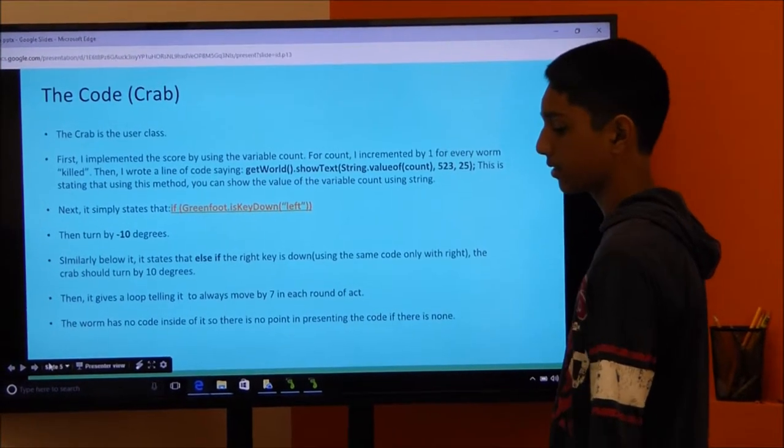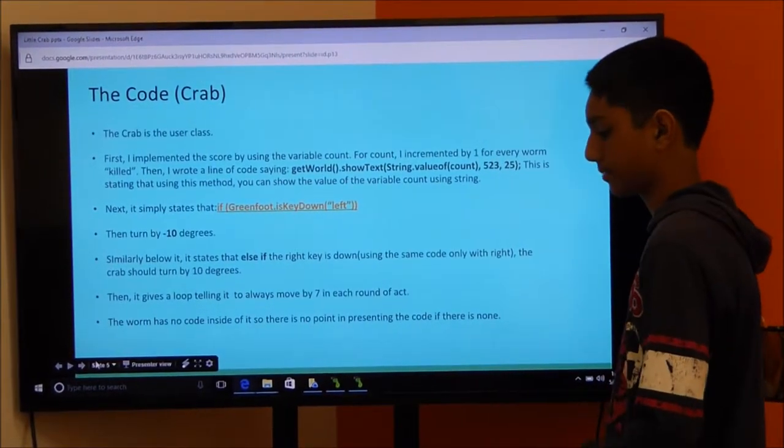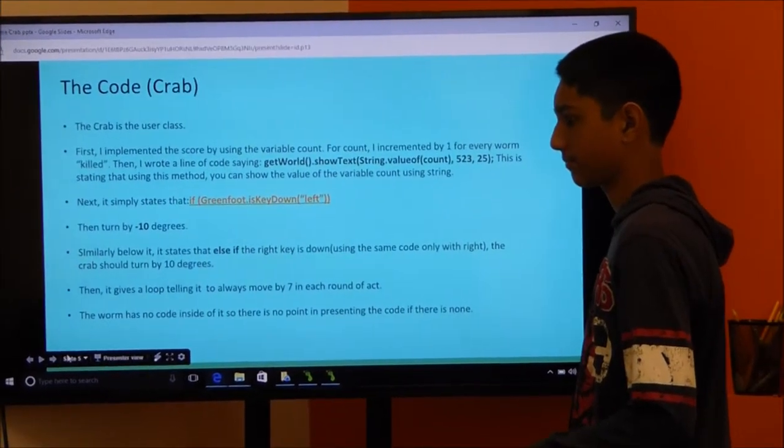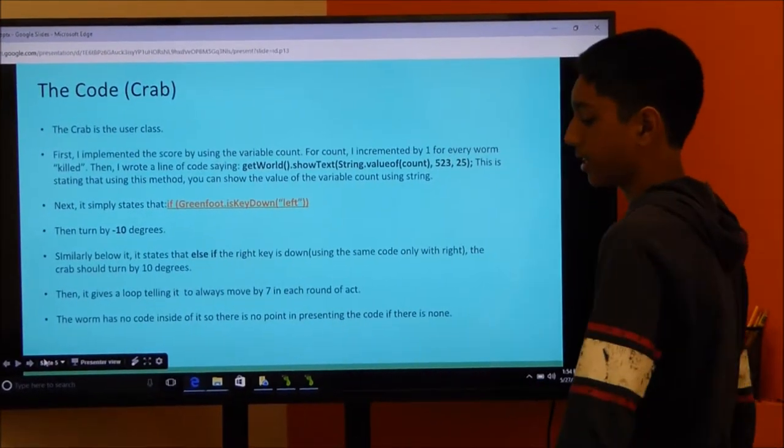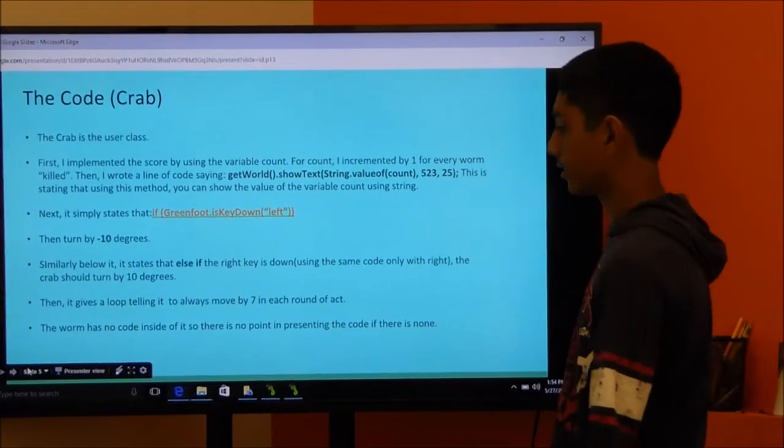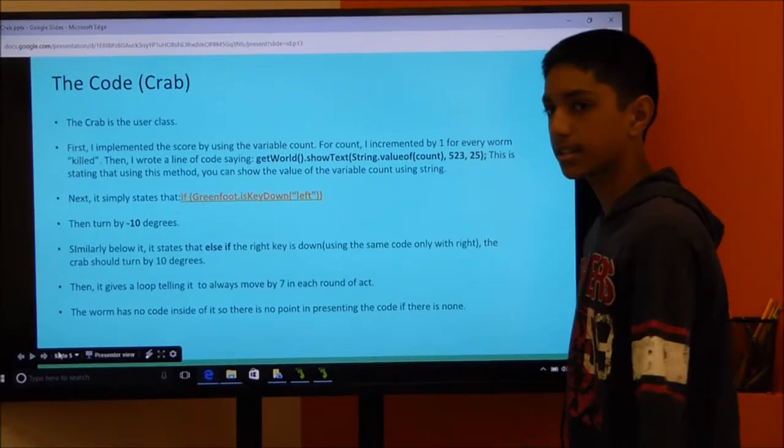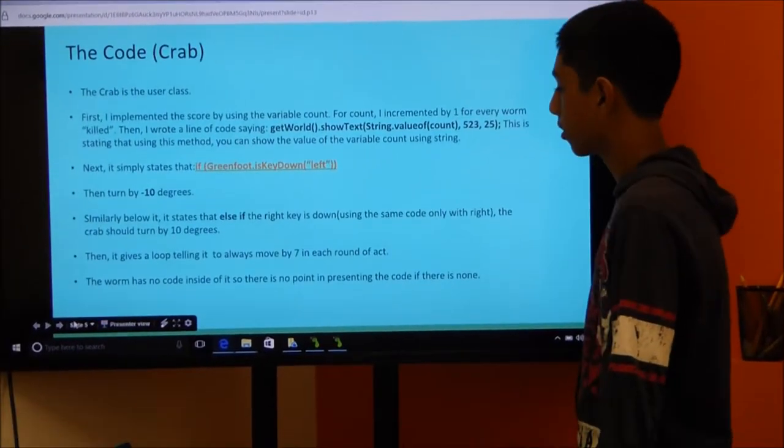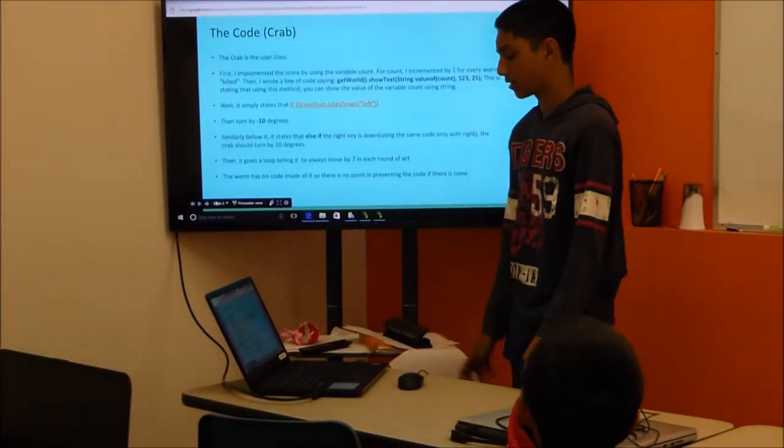To turn by negative 10 degrees, you press the left key. And then there's a loop which tells the crab to always move by seven pixels on all times.